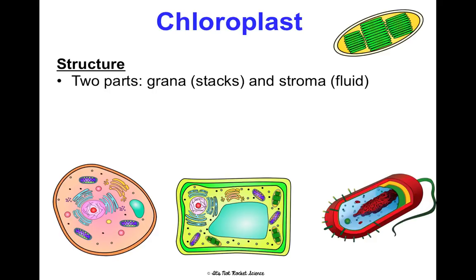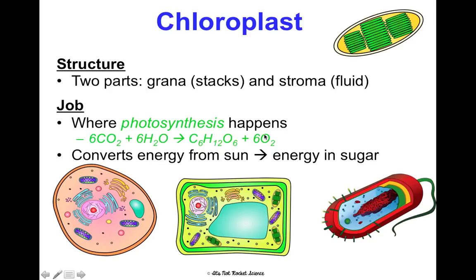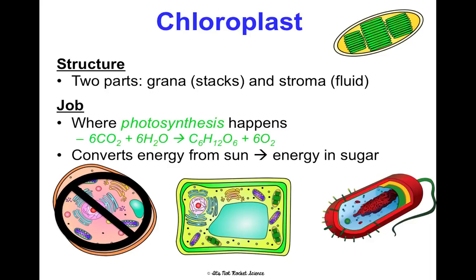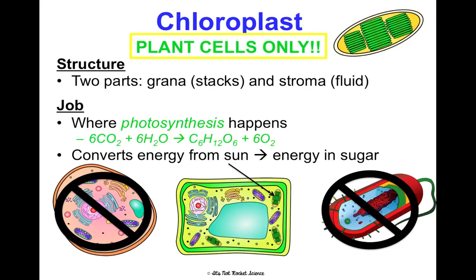Chloroplasts also have two parts: the grana, which are the stacks, and the stroma, which is the fluid part. This is where photosynthesis happens — the chemical reaction where carbon dioxide and water produce sugar and oxygen in the presence of sunlight. We're taking energy from the sun and storing it in sugar. We'll talk much more about this in unit three. Chloroplasts are found in plant cells only — not in animal cells or prokaryotic cells.